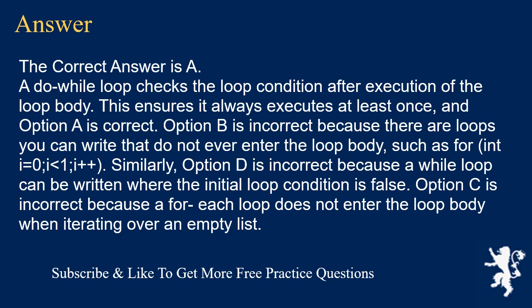Option B is incorrect because there are loops you can write that do not ever enter the loop body, such as: for (i = 0; i < 1; i++). Similarly, option D is incorrect because a while loop can be written where the initial loop condition is false. Option C is incorrect because a for-each loop does not enter the loop body when iterating over an empty list.